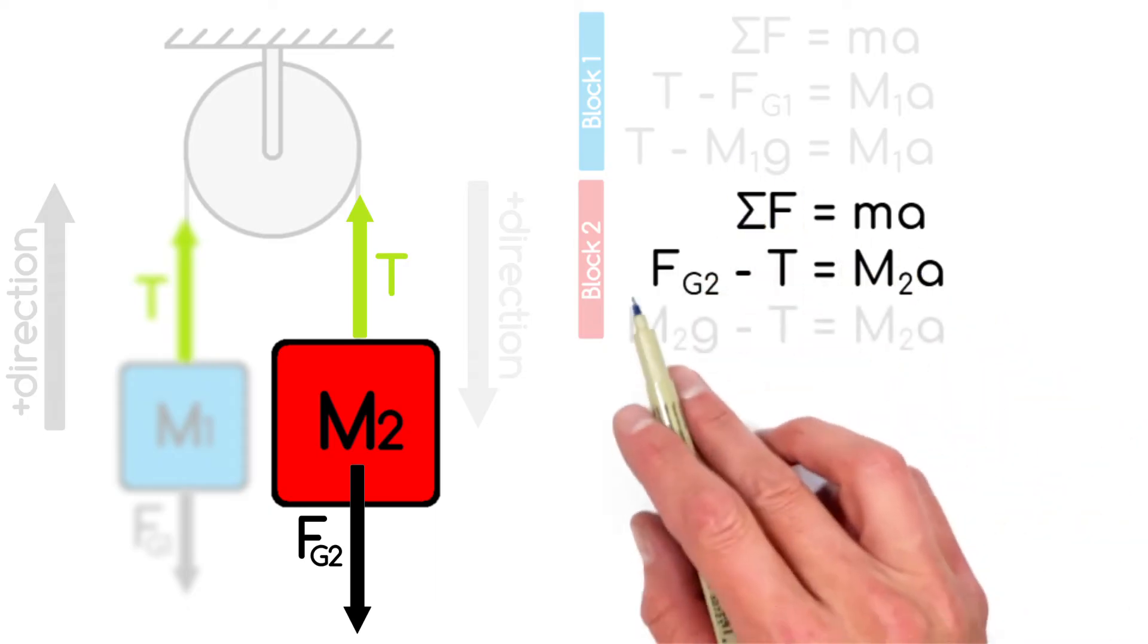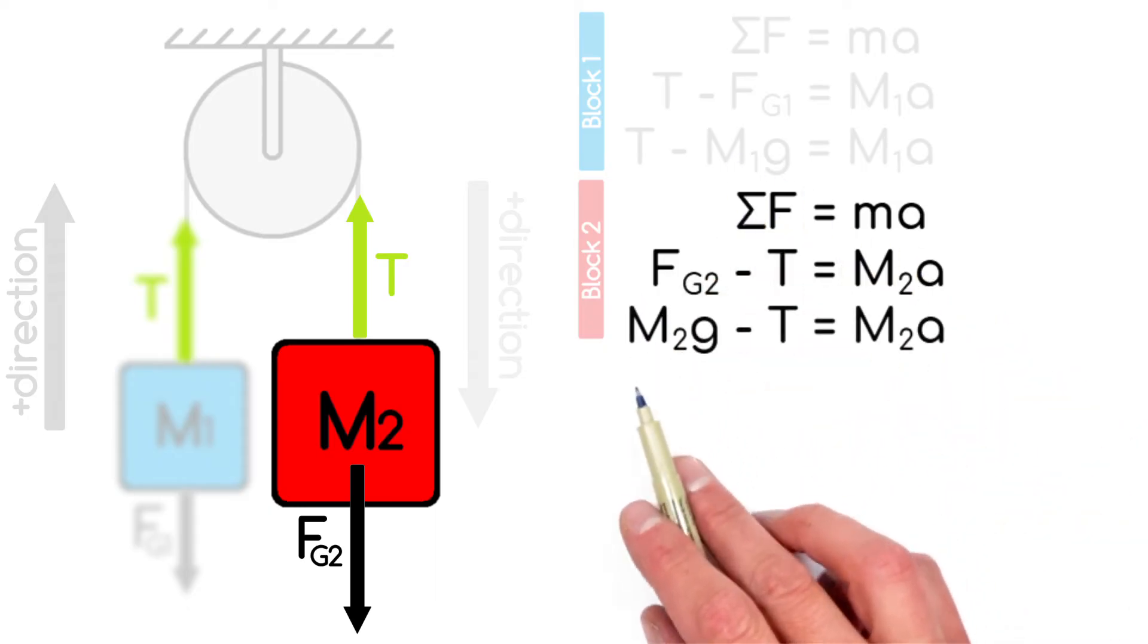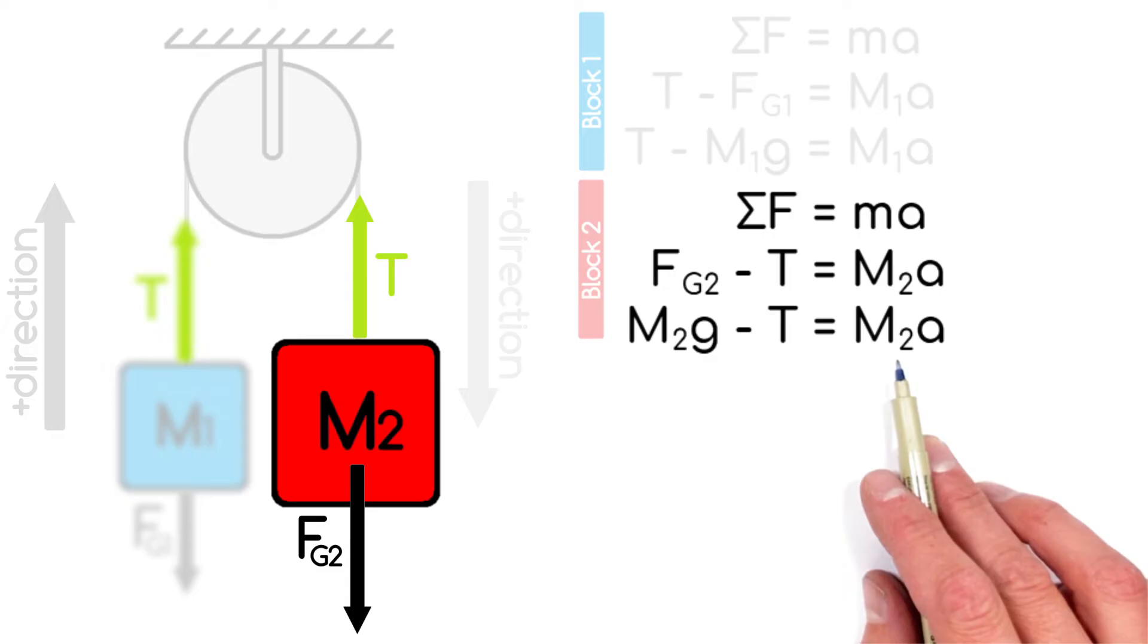And just like before, expanding out our equation for gravity, we come up with a single equation using Newton's second law that again involves two unknowns.